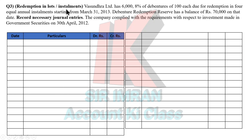In Question Numbers 1 and 2, we did the lump sum method. Today we will do redemption by installment method. Question: Sundra Limited has 6,000 8% debentures of Rs. 100 each — so 6,000 multiplied by 100 equals Rs. 6 lakhs — due for redemption in four equal installments.